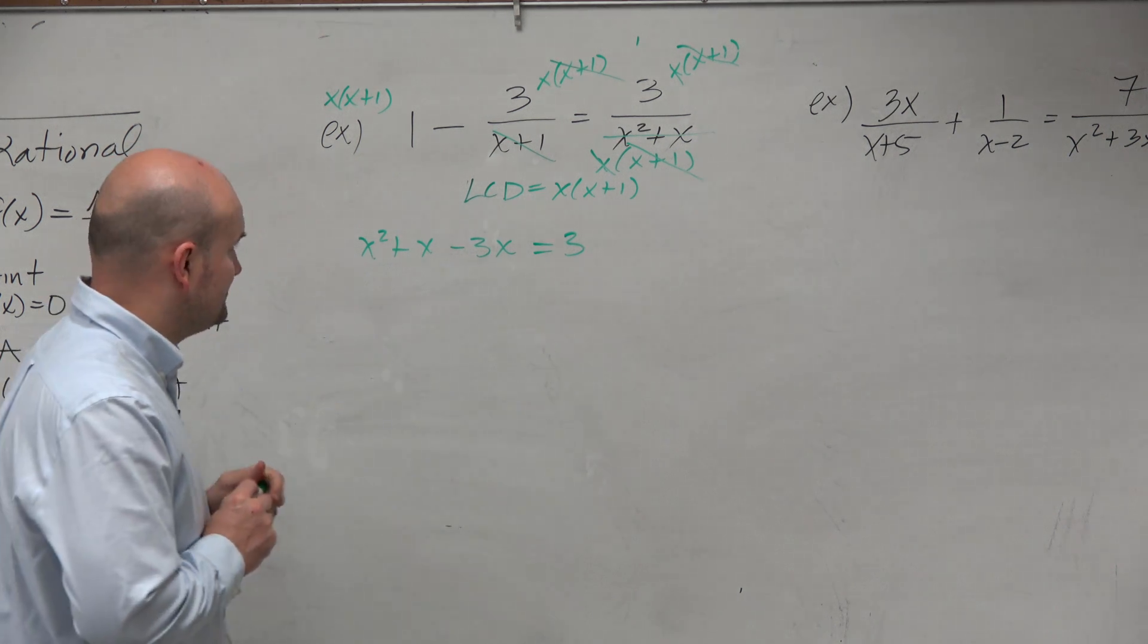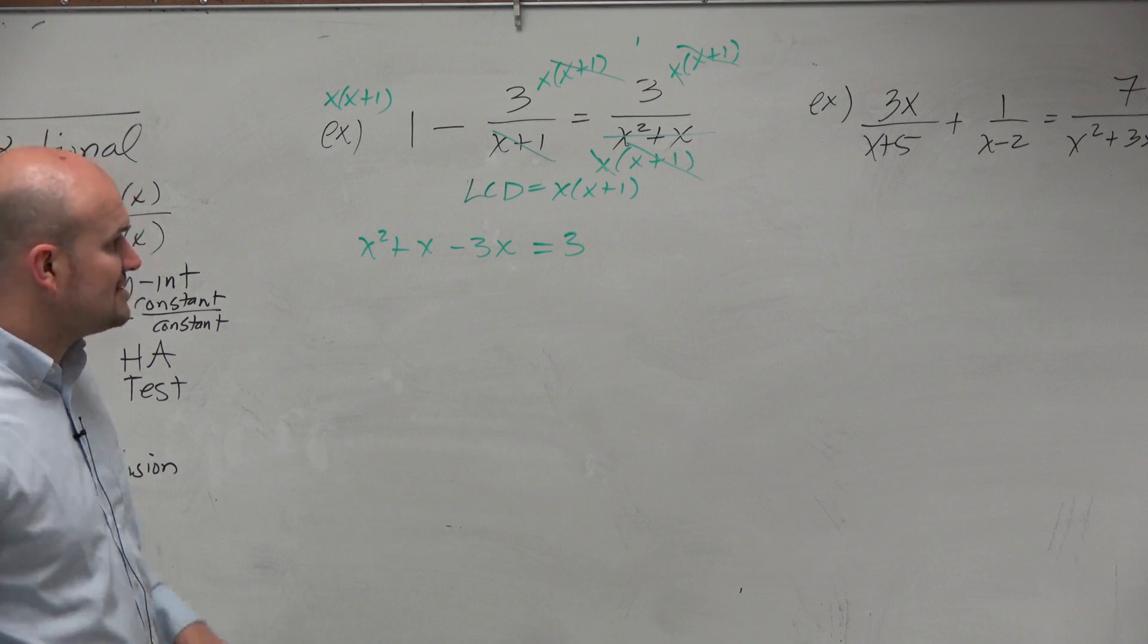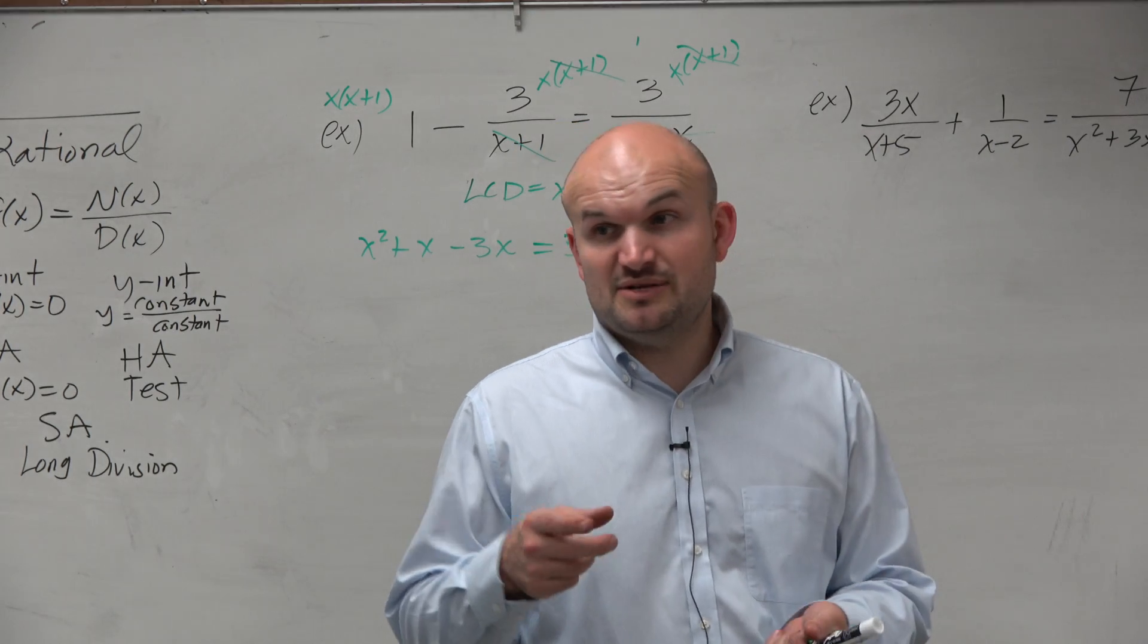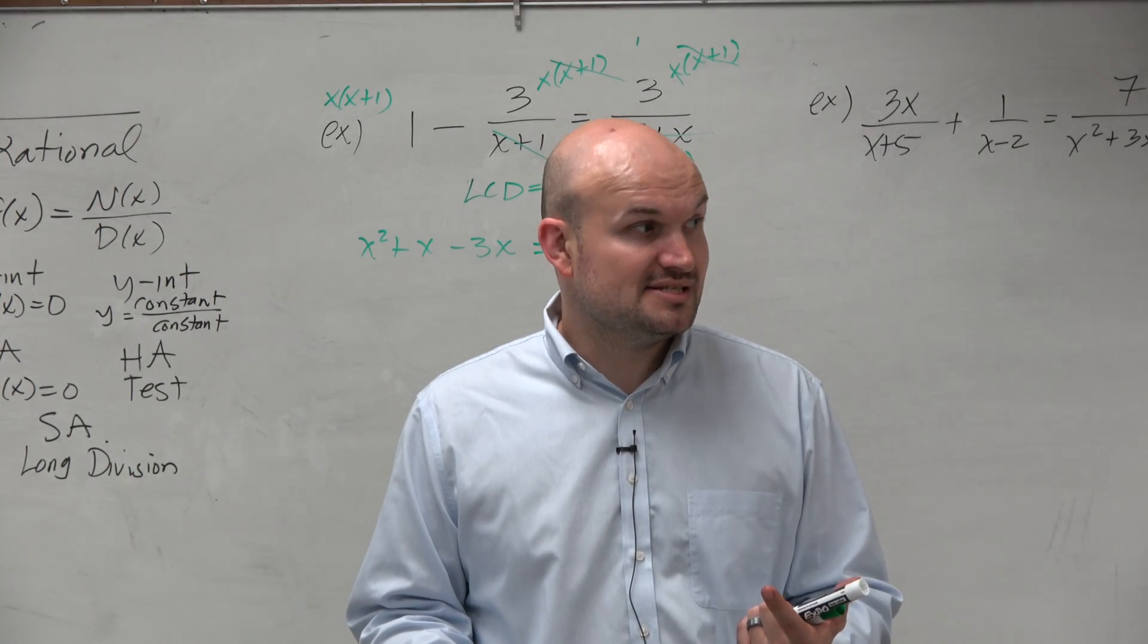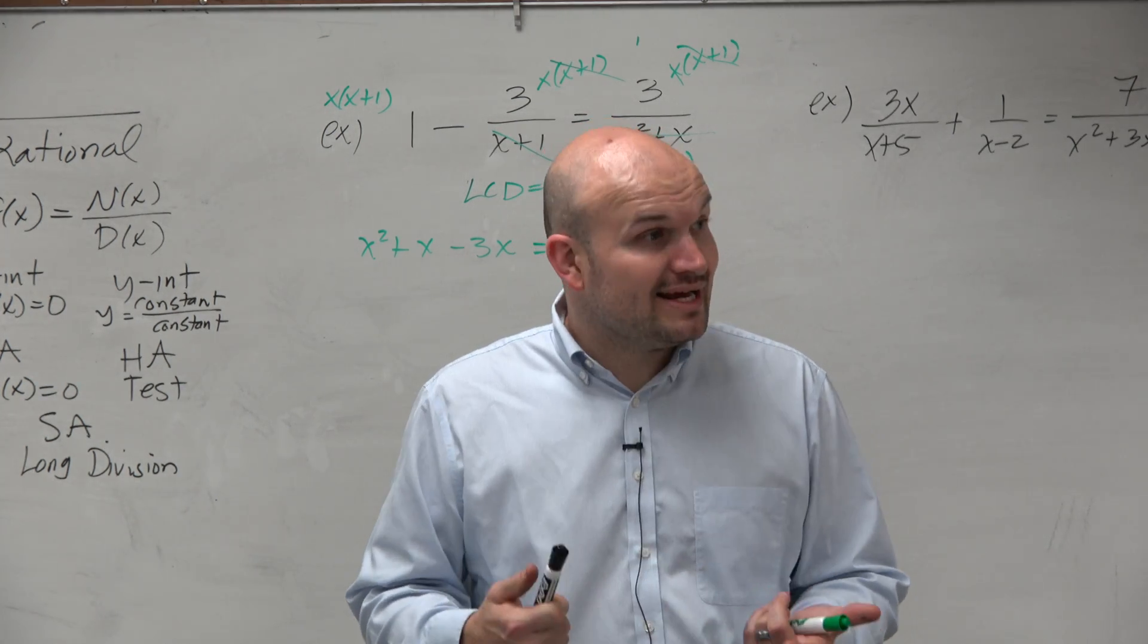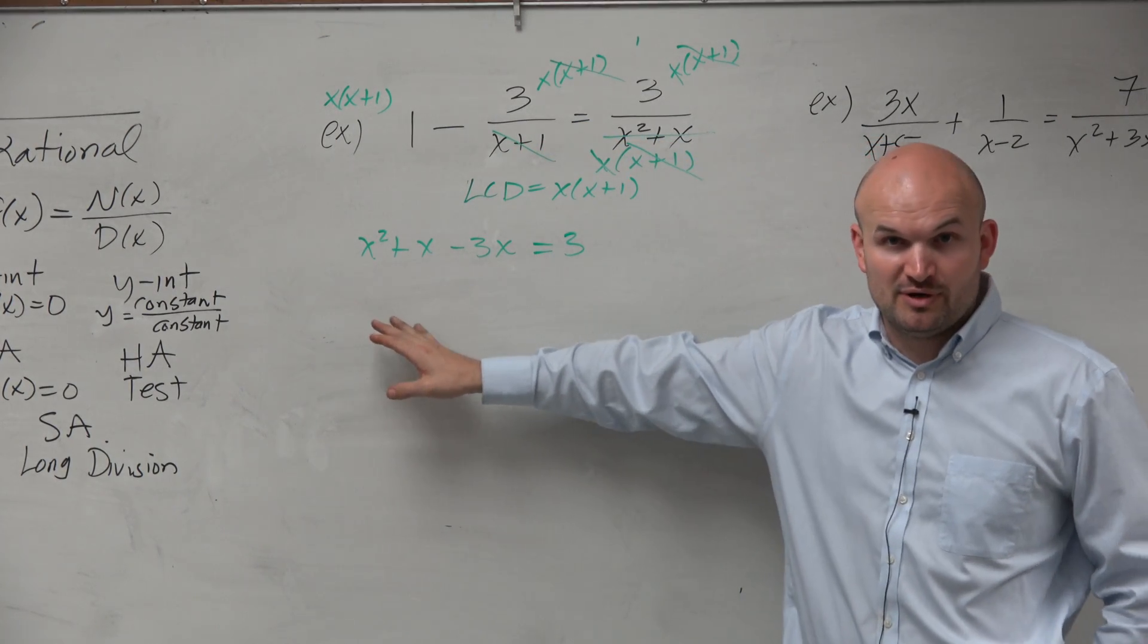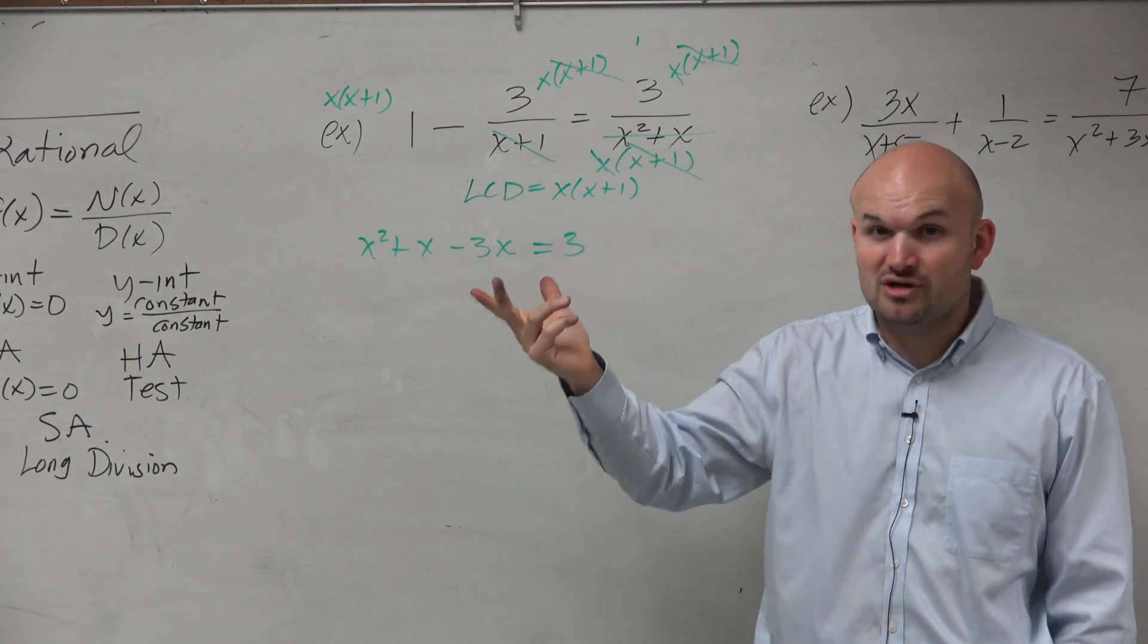Now, the next thing is x squared plus x minus 3x. Usually the last example or the last couple examples, we just solved for x, right? We did inverse operations. Well, here we notice that this is a quadratic. And unless we only have the quadratic term and we don't have a linear, we're either going to have to factor, quadratic formula, or complete the square.